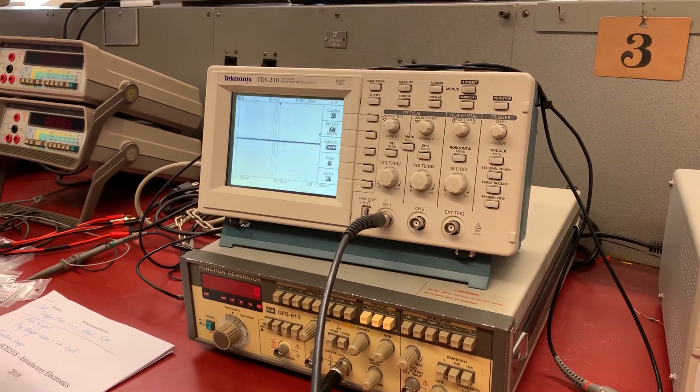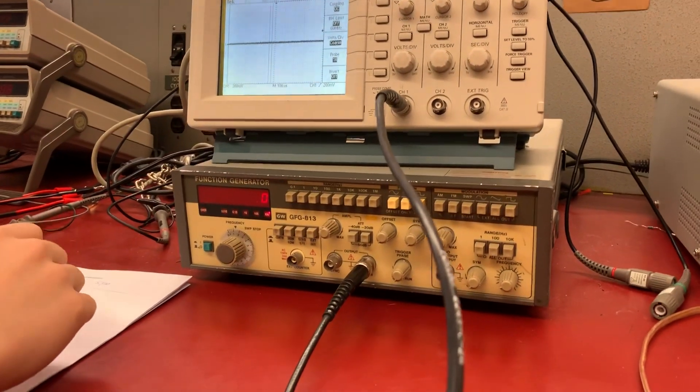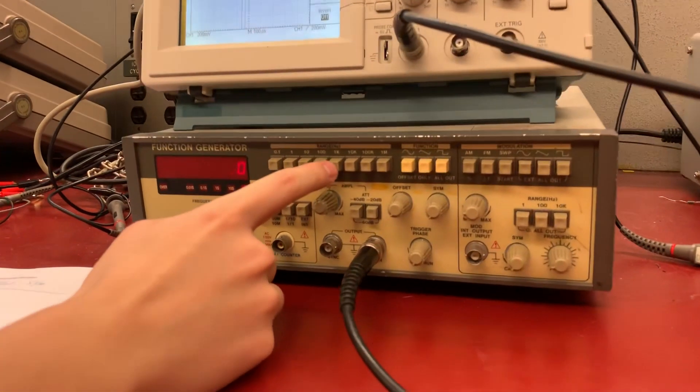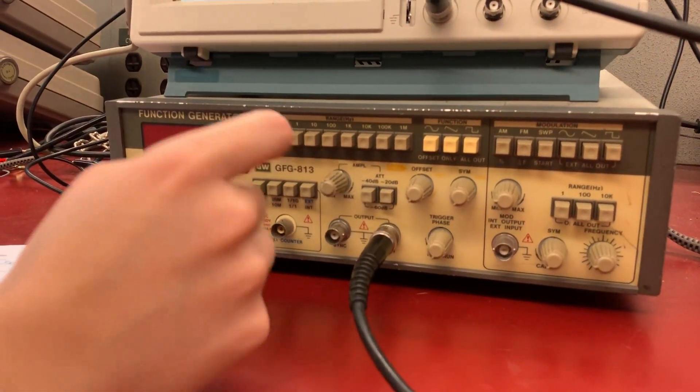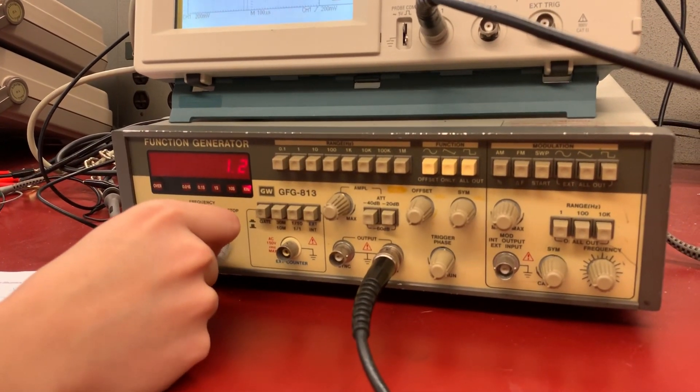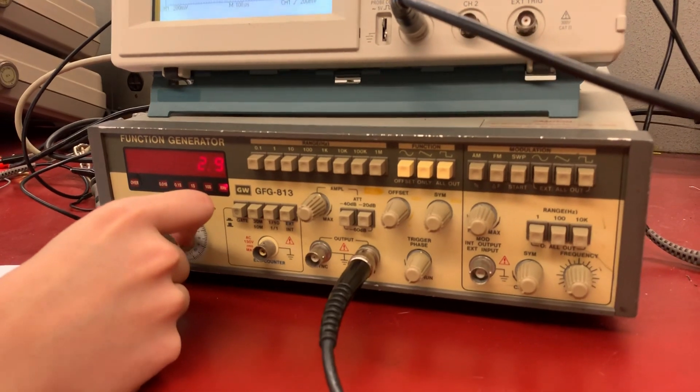Now we're back to the function generator. First, we need to find the frequency range - how much frequency we want to operate. Let's say we operate at 1kHz frequency. In the 1kHz range, we can use this knob to tweak the function frequency.